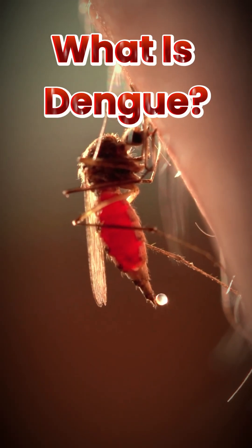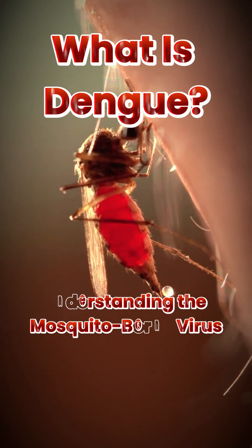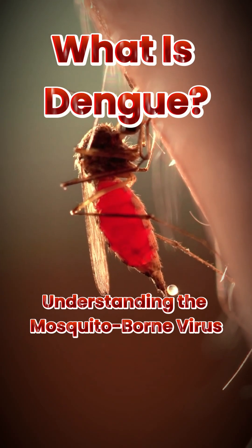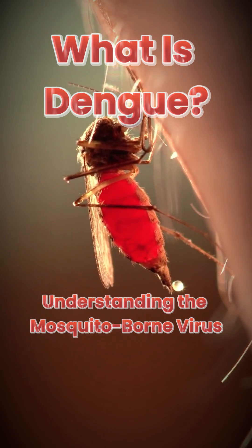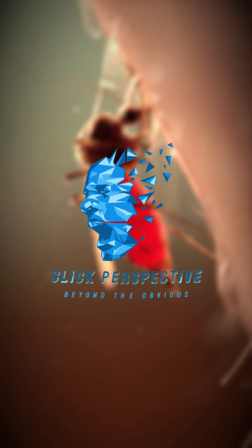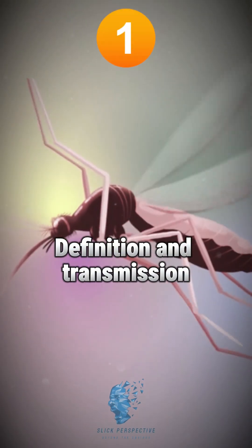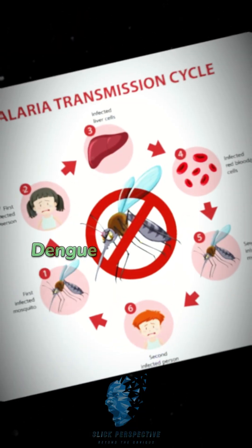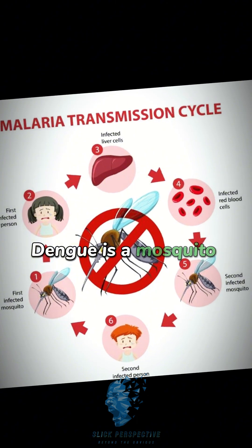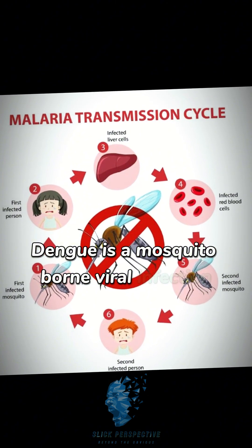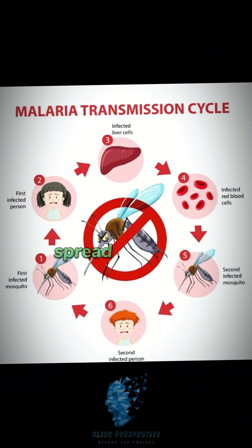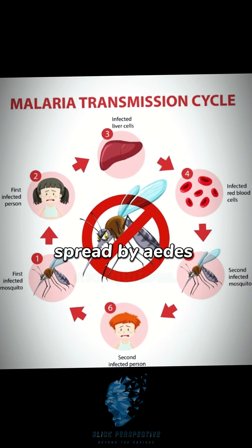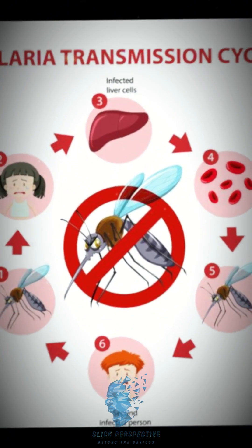What is dengue? Understanding the mosquito-borne virus. Definition and transmission: dengue is a mosquito-borne viral infection spread by Aedes mosquitoes.